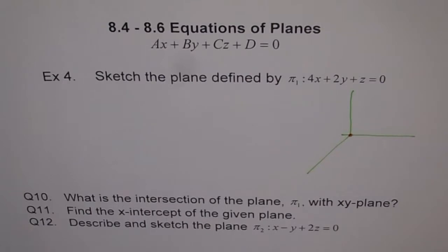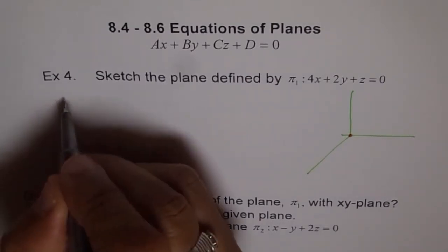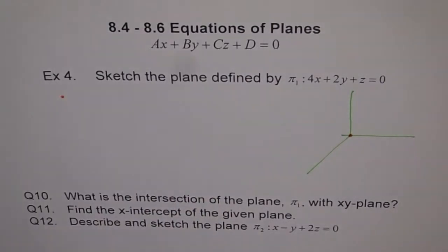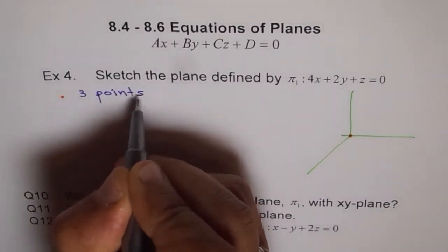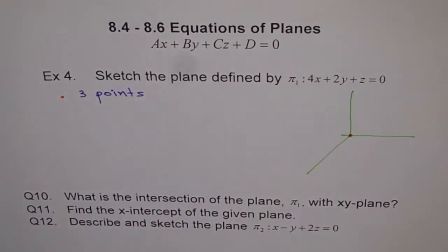Now, to define a plane, what do we need? Important thing is, how can we define a plane? So, for defining a plane, we need three points. That's minimum requirement. So, if we can find three points, we can define a plane.